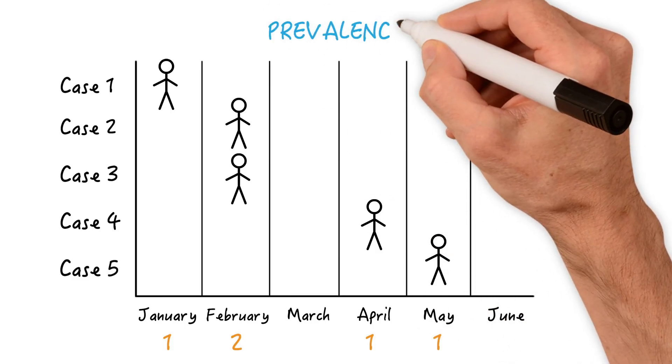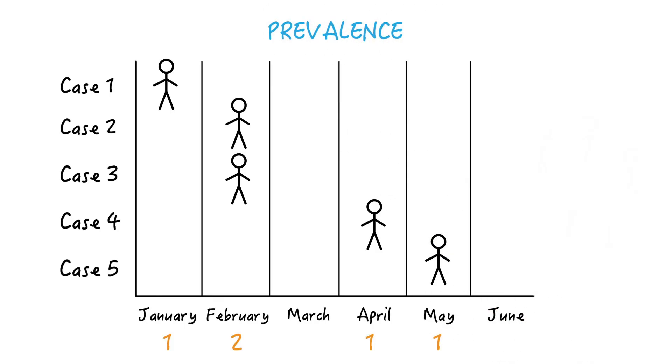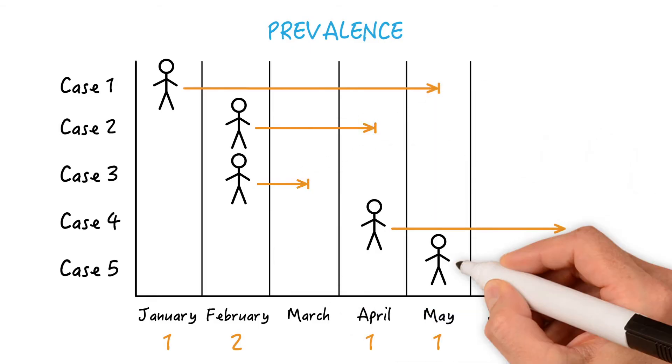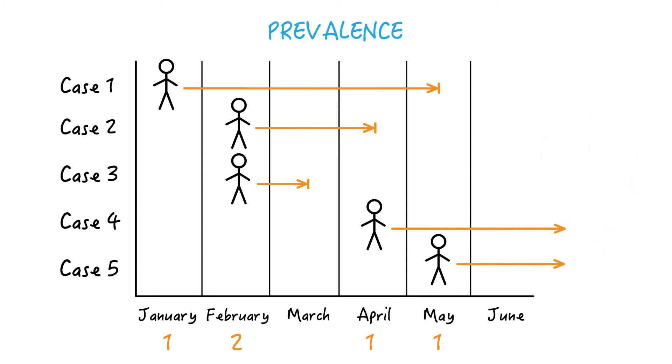Now prevalence also takes into account the duration of the disease. Let's say case number one is cured in May, case number two is cured in April, case number three in March, case four and five during the second half of the year. Now let's look at the prevalence of tuberculosis in these months.